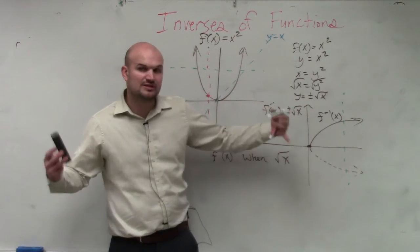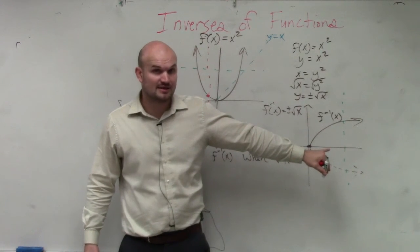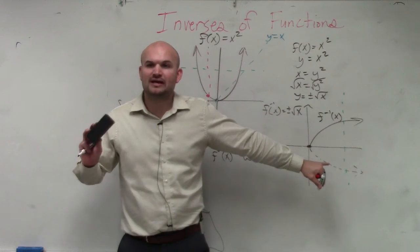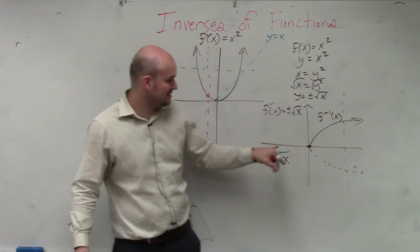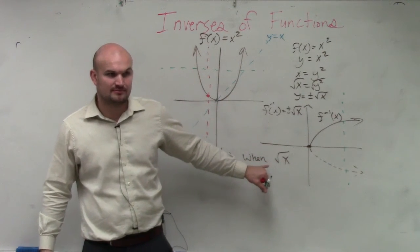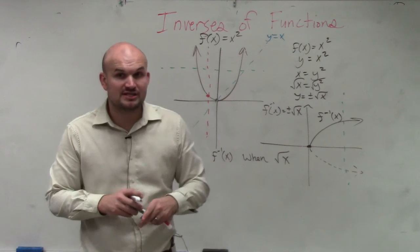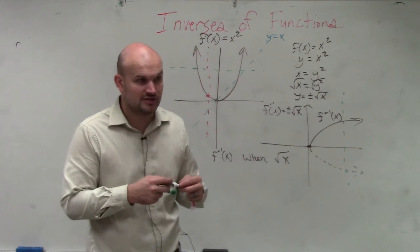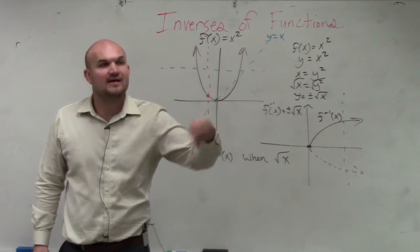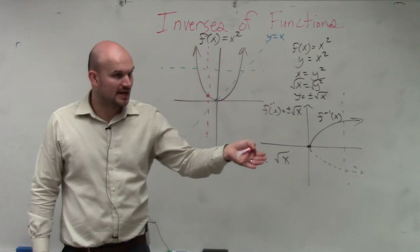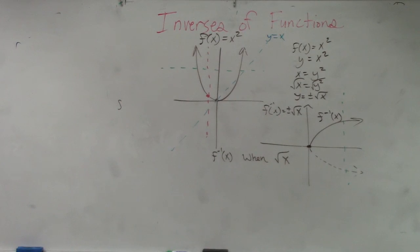All I want you guys to really understand from this is: first of all, the direct inverse is not a function. I can make it a function, though, if I only look at part of the graph — only the positive square root of x. Not all inverses of functions are functions; that's why we use the horizontal line test. However, if we create a restriction, then we can have the inverse be a function. We're going to talk about restrictions a little bit further, but this was a review from your previous work.